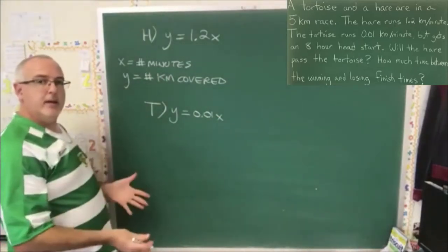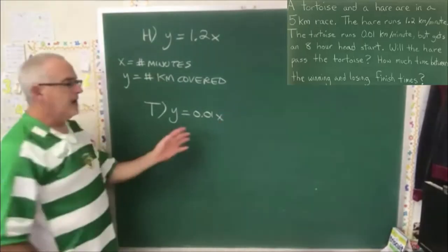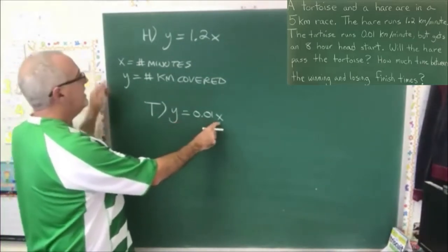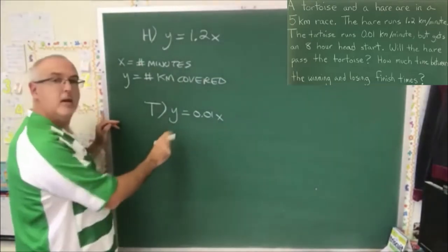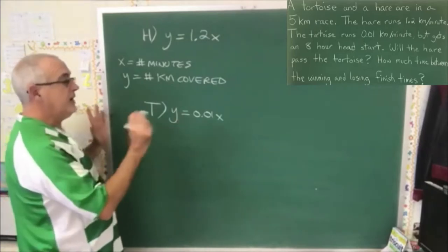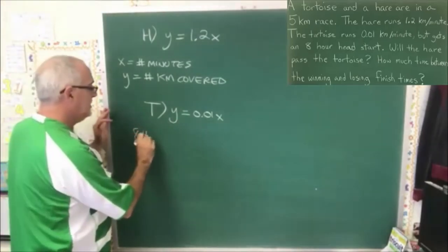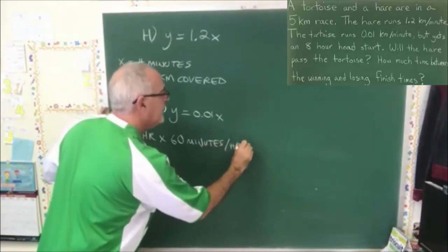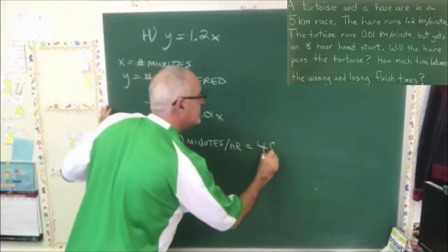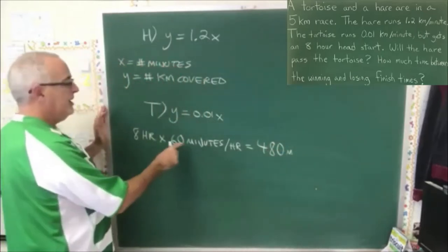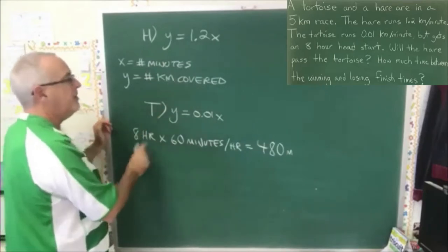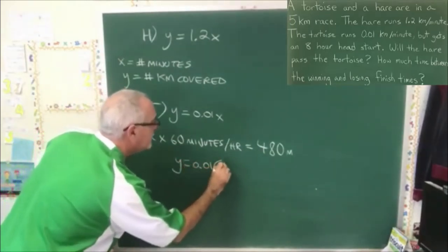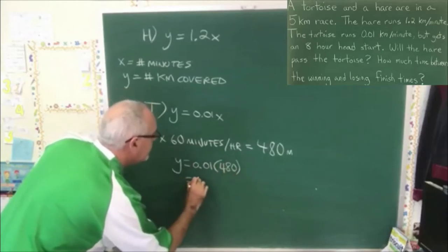But the tortoise has an 8-hour head start — what do I do with that? It sounds like a y-intercept, but that's not what I'm going to do. What I'm going to do is plug 8 hours as a number of minutes into this equation and see how many kilometers the tortoise has covered after 8 hours. The first step is 8 hours times 60 minutes in an hour gives me 480 minutes. I can write y equals 0.01 times 480, and I get 4.8 kilometers.